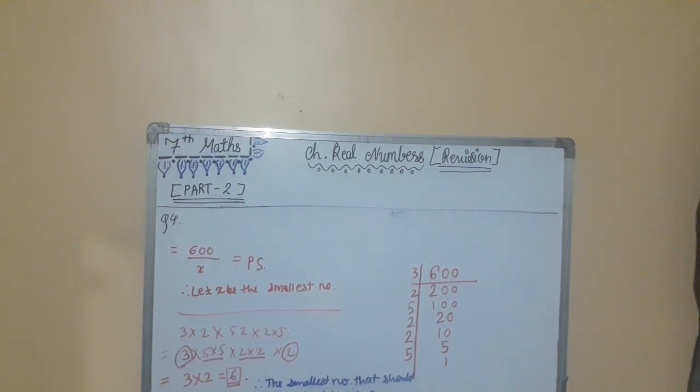We will now simplify, divide 600 by 6. 6 multiplied by 100 is 600. Therefore, 100 is the perfect square of 10. 10 square is 100. We will write here, 600 upon 6, is equal to 100, is equal to 10 square. Perfect square. I hope you have understood this question.